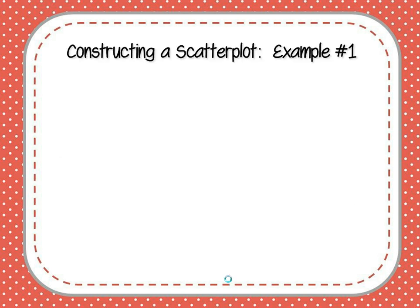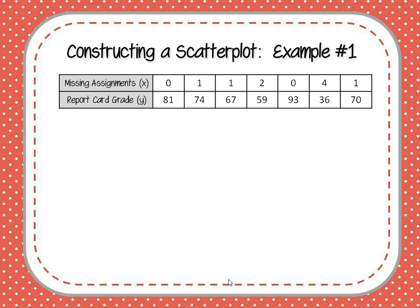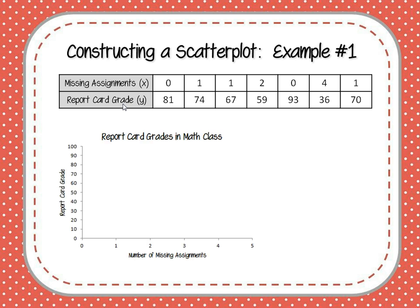Let's jump into our first example. Go ahead and turn your notes page over because you're actually going to be constructing scatterplots right along with me. If you need to pause, please do so. Our first example is going to be relating the number of missing assignments to students' report card grades. Hopefully as eighth graders, you're well aware by now that the more assignments you're missing, the lower your grade is going to be. We know that there's a relationship between those two things, but let's see what this graph looks like.